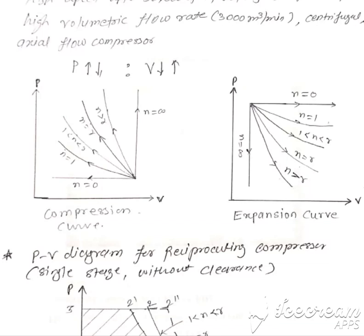The first expansion curve is a constant pressure process where the value of n is equal to 0. This is a straight line perpendicular to the pressure line. The second curve is the expansion curve for an isothermal process where the value of n is equal to 1. The third curve is for a polytropic process where the value of n lies between 1 and gamma.